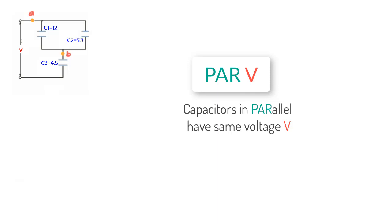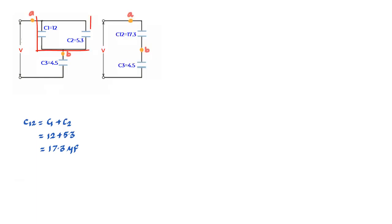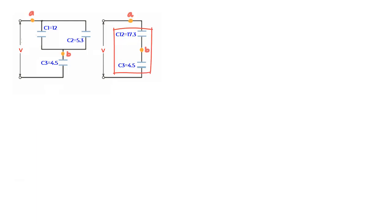With this knowledge, let us collapse C1 and C2 to a single capacitor: C12 = C1 + C2 = 12 + 5.3 = 17.3 microfarad. The simplified diagram now has C12 and C3 remaining. To confirm they are in series: the charge moving from the top plate of C3 must entirely go to the bottom plate of C12, with no splitting to another capacitor. This confirms C12 and C3 are in series.